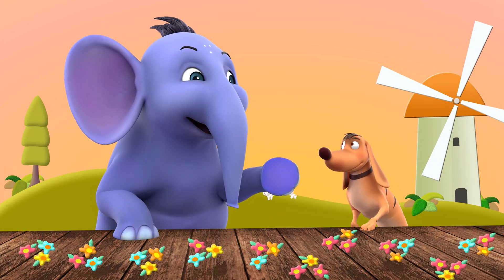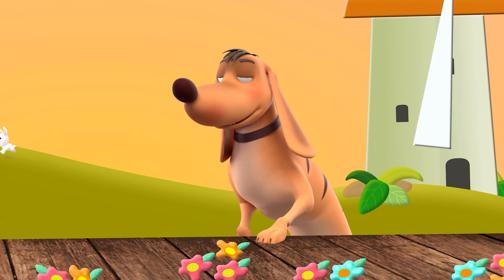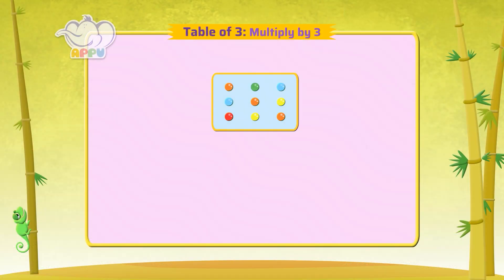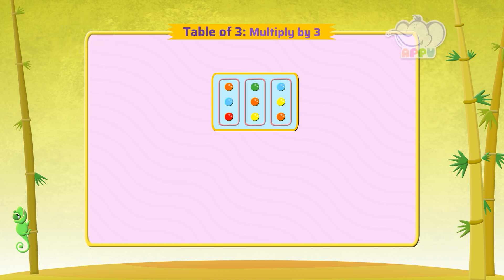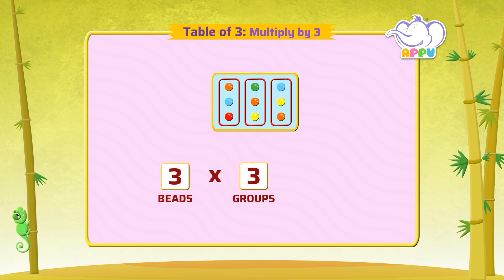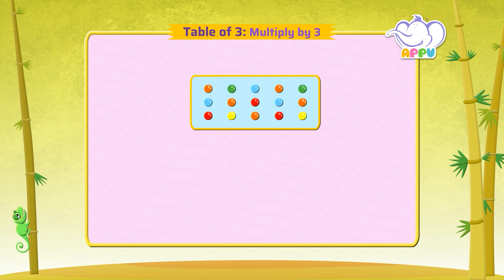Let's do some practice of the three times table by counting beads. How many beads are there? We can count and see the answer: one, two, three, four, five, six, seven, eight, and nine. But how do we use multiplication tables to do this? There are three beads in three groups, so we write three times three equals nine beads.